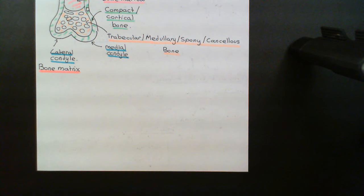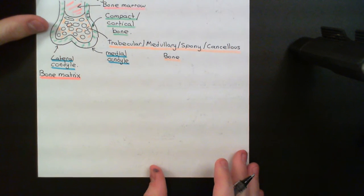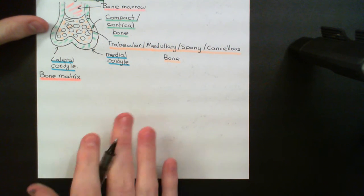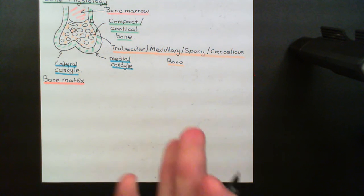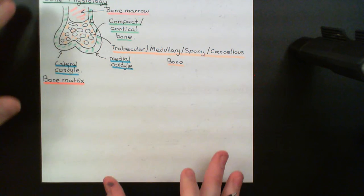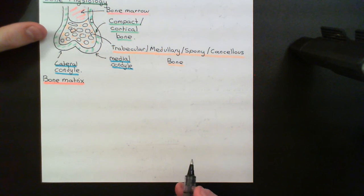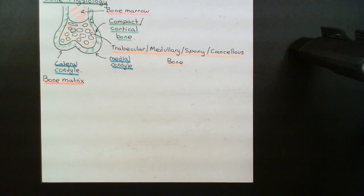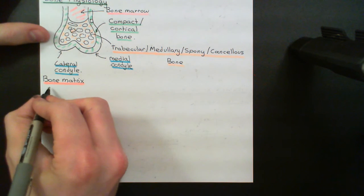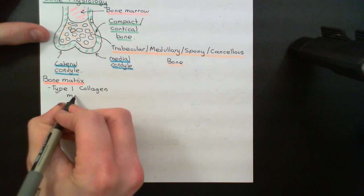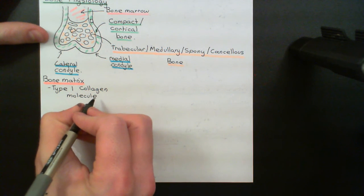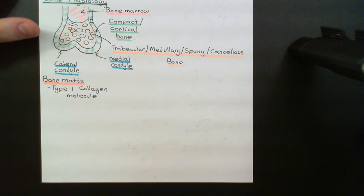To keep things simple, the bone matrix is made up of loads and loads of collagen fibres all laid in parallel with one another. These collagen fibres in bone are principally made up of type 1 collagen molecules. A collagen molecule is not just a single polypeptide — a collagen molecule means three proteins wound into a triple helix.